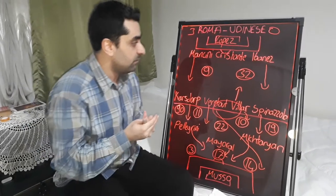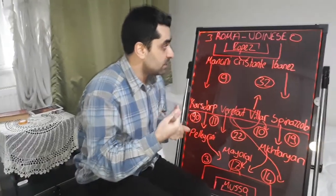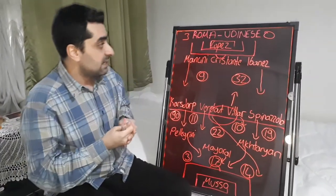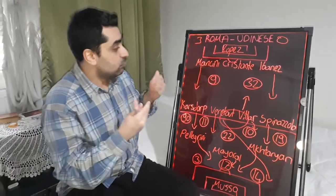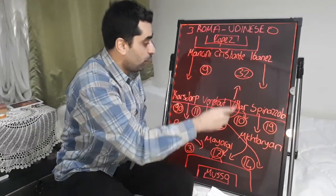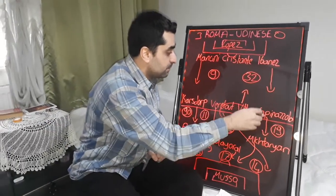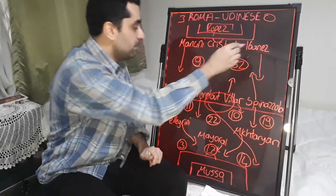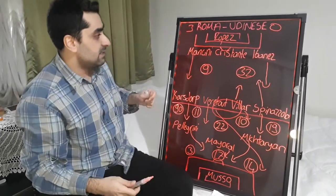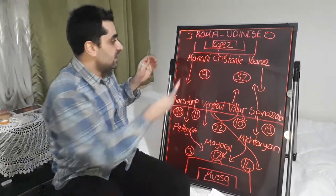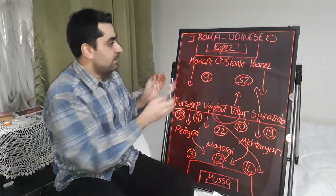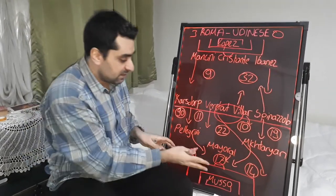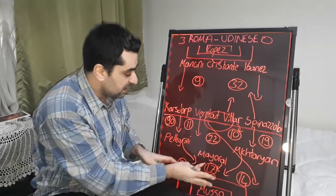The first half finished 2-0. When Ibanez came forward, Spinazzola stayed back and covered for him. Every time Mancini and Ibanez tried head shots in the Udinese box.